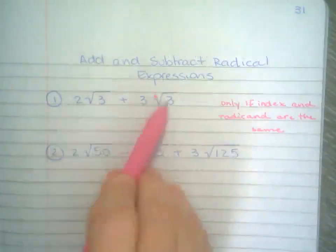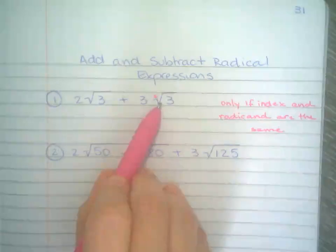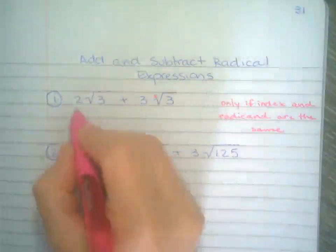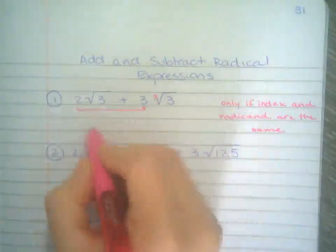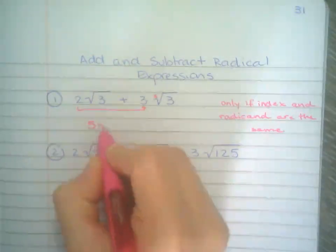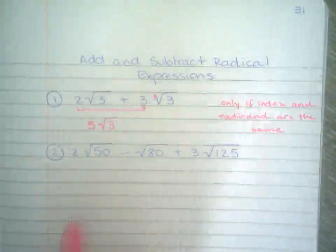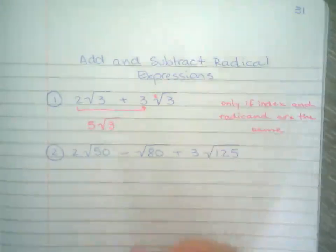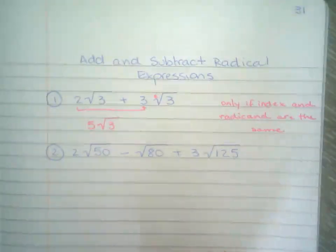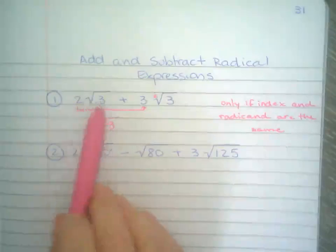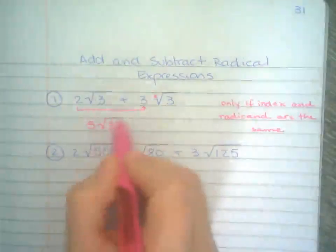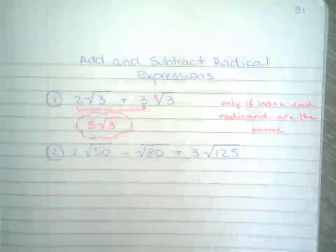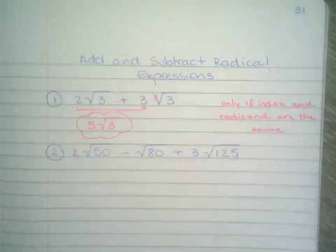Now that we know these guys are the same, that means I can add them together. I'm gonna do 2 plus 3, I get 5, and then square root of 3 doesn't change. Again, think about this as if you're combining like terms. If the index and the radicand are the same, then you can add or subtract. If not, you just leave them apart.